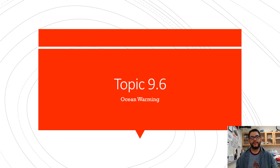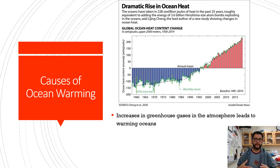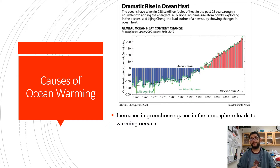Hey everybody, this is Mr. V and this is APES review video topic 9.6 on ocean warming. As we talked about, CO2 levels have been going up and that's causing a rise in temperatures because more heat is trapped on the surface of the earth. As we've seen, there's been a major shift in the amount of average heat that is absorbed by the ocean.